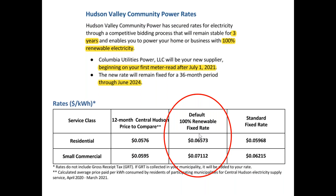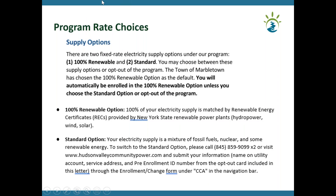Sometimes Central Hudson's rate is higher or lower. There is also a standard fixed rate — not renewable, mostly fossil and nuclear — but it is a little bit cheaper. So if you're looking for a strictly cost-effective rate, the standard option is for you. If you want 100% renewable you do nothing — that's the default. If you want the standard option you can opt down.